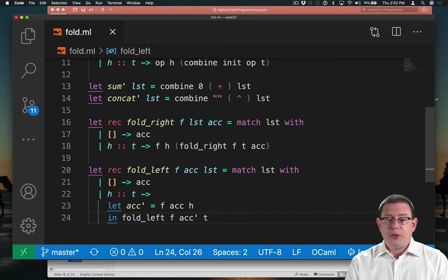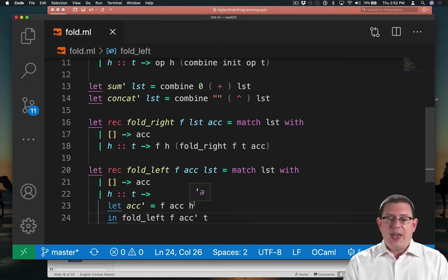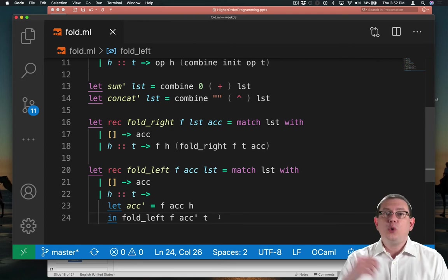So do you see why this is folding from the left? Any time we apply the function f, which does the accumulation, which does that combination operation, we're applying it first to the head, along with whatever we've accumulated so far, and only then moving on to use that result in continuing to fold with the rest of the tail.